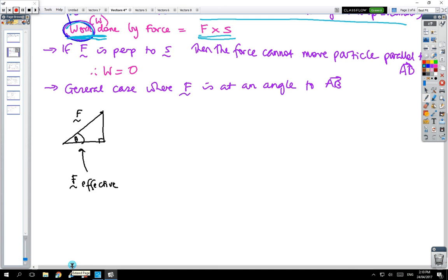Now if the force is perpendicular, so the particle is moving that way but the force is going that way, then there's no way the particle can go in that direction because the force can't move the particle, and so the work done is zero. But there's a general case where the force is acting at an angle. We use a little bit of trigonometry. This is the effective force.